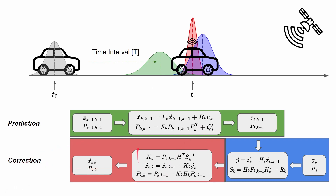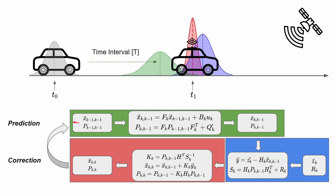The correction step can only be executed when we know we have just received a new measurement — from the GPS in our example. These two cycles, prediction and correction, are repeated continuously as the vehicle keeps moving. We keep doing prediction and correction on the update rate of 10 or 20 milliseconds. If the GPS sensor gives a new measurement every 100 milliseconds, then the correction step is executed every 100 milliseconds — it does not need to be executed with each prediction step. These two steps are completely isolated.